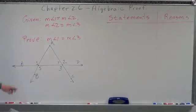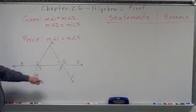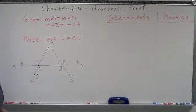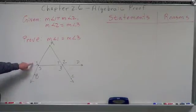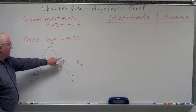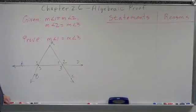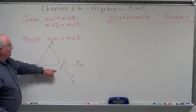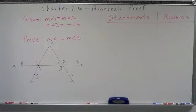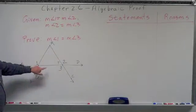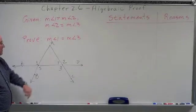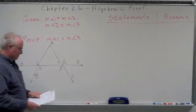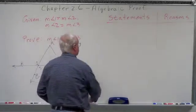Here's a little picture: here's angle 1, here's angle 2, and here's angle 3. We have a statement that tells us that the measurement of angle 1 is equal to the measurement of angle 2, and they say that the measurement of angle 2 equals the measurement of angle 3, and they want us to tell them why that works.